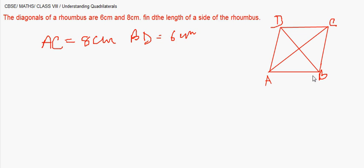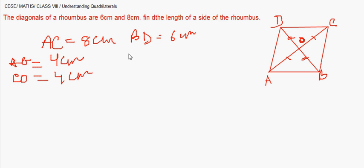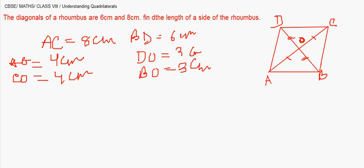We have to find AB, BC, CD, and DA. We already know that the diagonals of a rhombus bisect each other at 90 degrees, so AO = CO and BO = DO. If AC is 8 cm, then AO = CO = 4 cm. On diagonal BD, DO = BO = 3 cm.